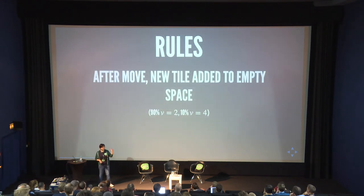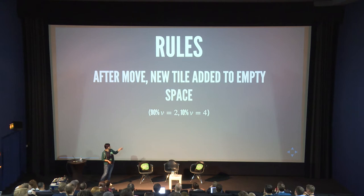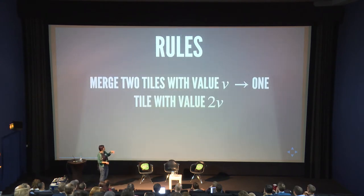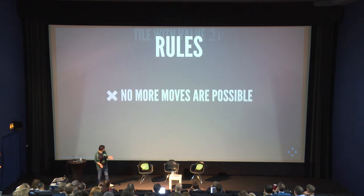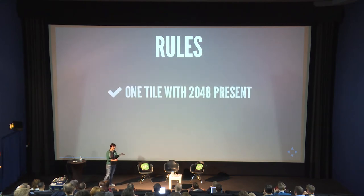After each move a new tile is added to an empty space. The value of the new tile is either 2 or 4 — there's a 90% probability it will be 2 and 10% it will be 4. In this 2048 implementation, 2 is the lowest possible value. If you merge two tiles with the same value, you get one tile with the sum of those values. You lose when no more moves are possible, and you win if you have one tile with the value of 2048.